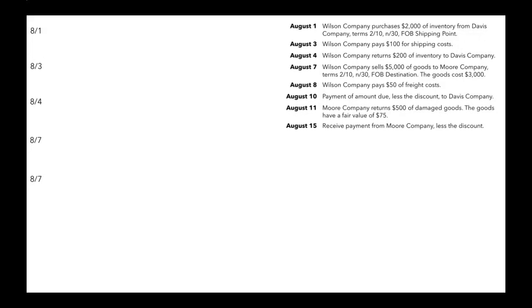Starting on August 1st, Wilson Company purchases $2,000 of inventory from Davis Company, terms 2/10 net 30, FOB shipping point. That means this purchase was made on account and Wilson Company could get a 2% discount if they pay back within 10 days, or they have to pay the net — all of it — within 30 days. FOB shipping point means the buyer has to pay for shipping costs.